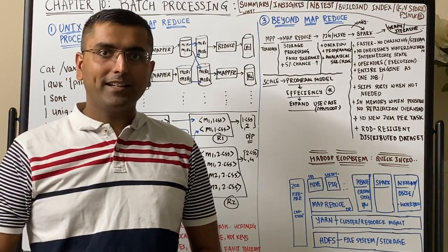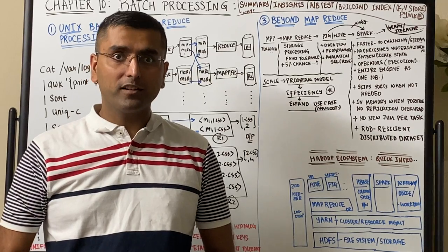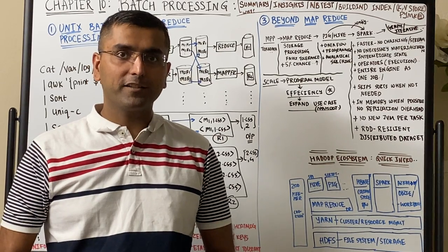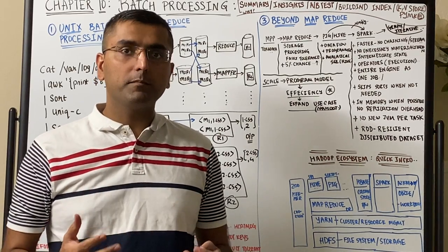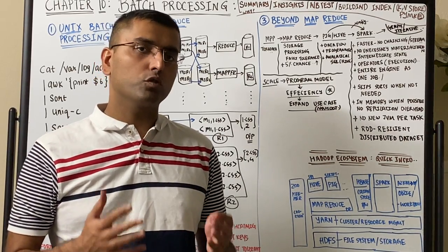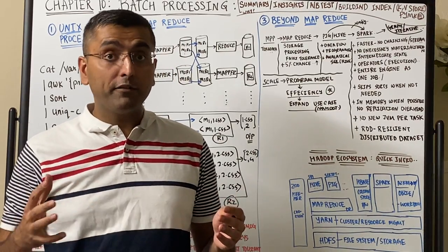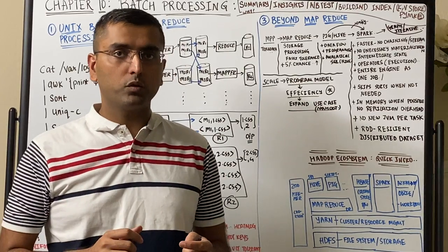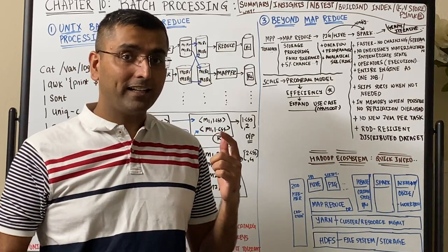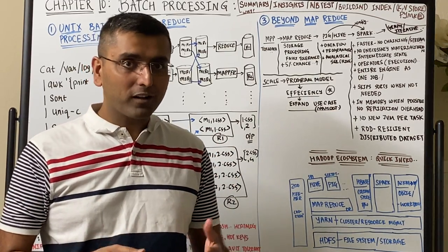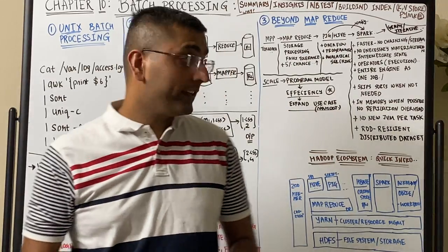Chapter 10: Batch Processing. With this chapter we are getting into a new section of the book — the final section on derived data. So far we have looked at data stores and systems that are a single source of truth. Now we're going to look at data systems derived from those, including how indexes are built, how analytics systems work, and examples from the Hadoop ecosystem.